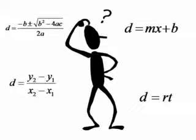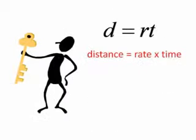Aha, yes, that's it. D equals RT. Distance equals rate times time.